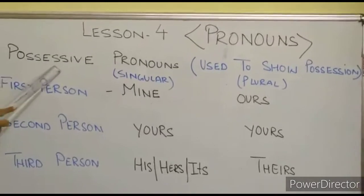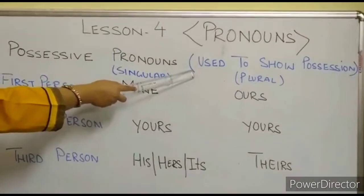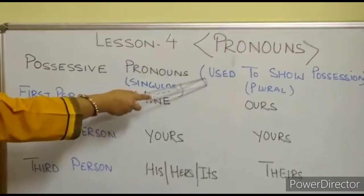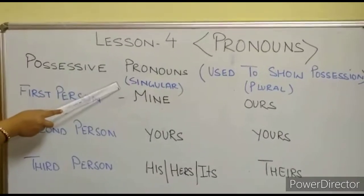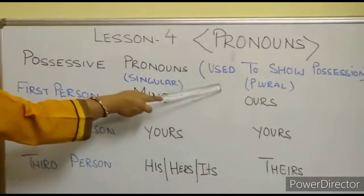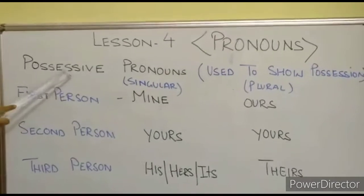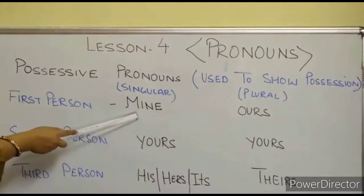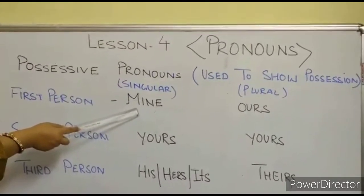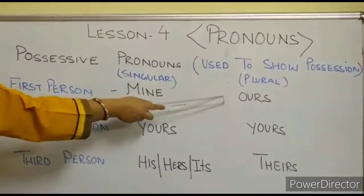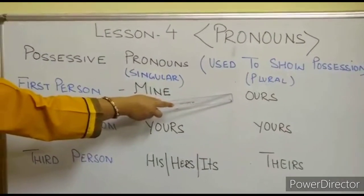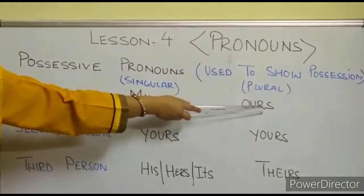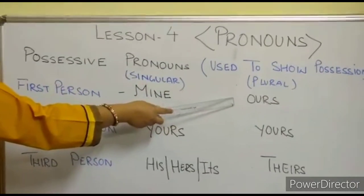Possessive pronouns are used to show possession — that is, belonging or ownership, when a thing belongs to a person. For first person singular, we use 'mine' — 'This dress is mine.' For first person plural, we use 'ours' — 'These dresses are ours.' Notice that an S is added to show possession.